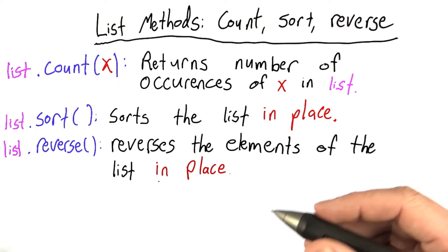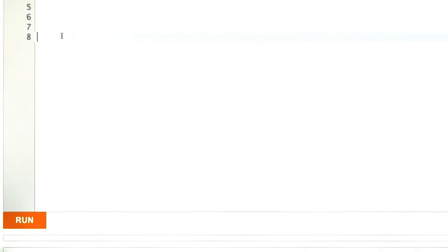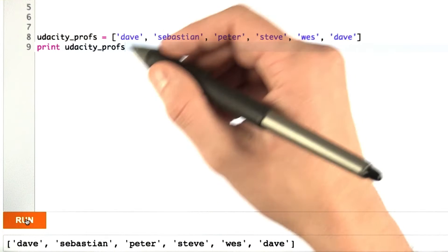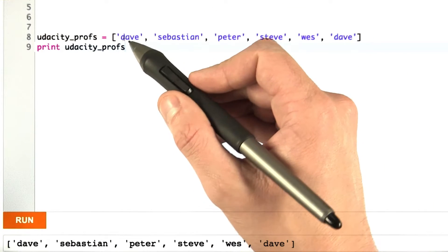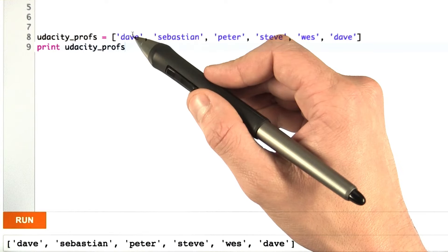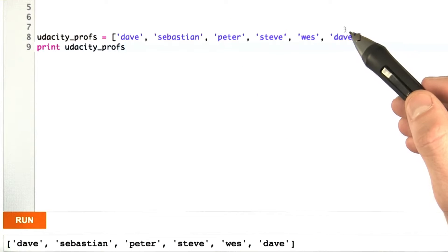Now, let's try using these methods. Let's define a list of the Udacity professors. In this list, I've included all of the professors of the six classes, and you'll see that Dave's name comes up twice. This is because Dave teaches two of the classes. Also, it makes this problem a bit more interesting.